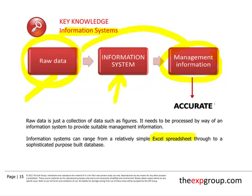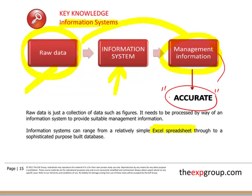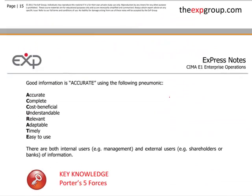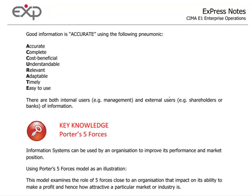We've got an arrow showing raw data converted with information systems to provide management information. And management information should be accurate. Now what do we mean by accurate? Accurate is a very well-known mnemonic, and if we look on the next page, page 16 of the notes, it tells us what is meant by accurate.